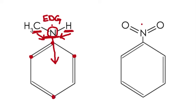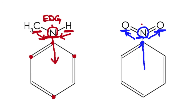Now let's look at the other example. Look at the atom directly attached to the benzene ring and compare it to the atoms attached to it. If the atom attached to the benzene ring is less electronegative than the atoms attached to it — meaning oxygen is more electronegative than nitrogen — the oxygen atoms will shift electrons toward itself, therefore withdrawing electrons from the ring, making this an electron withdrawing group, which will cause meta-directing substitution.